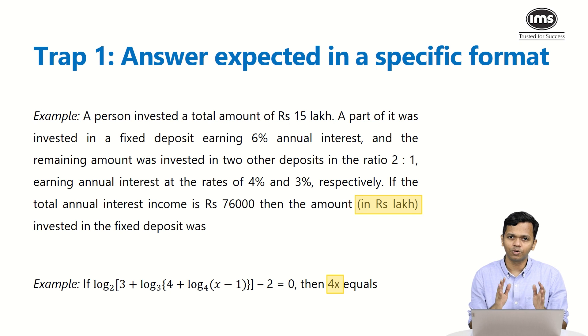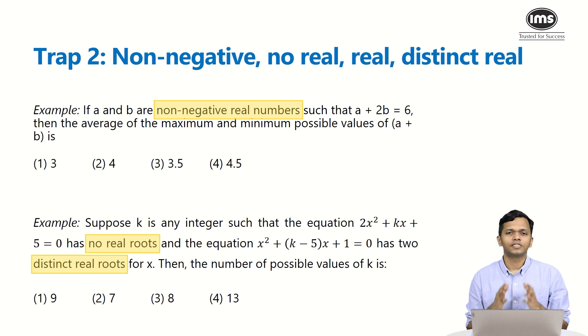So in a hurry if you are solving this and you end up calculating x correctly and put that as theta, then you are going to get it wrong. So you have to be careful: are they asking you x or x plus 2 or 4x or something else? So you have to read the question carefully to avoid this kind of trap. The second trap that I'm going to talk about is going to be on the specific words that you see in the question, which is going to be words such as non-negative, no real, real, distinct real and so on.